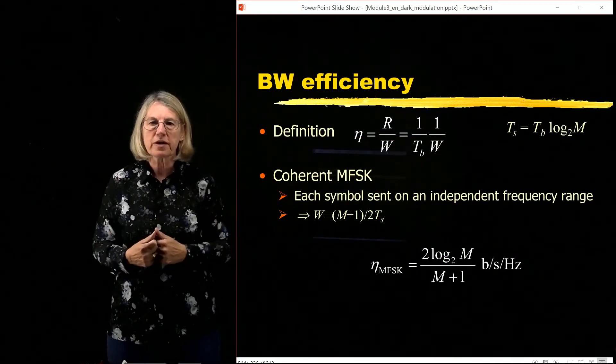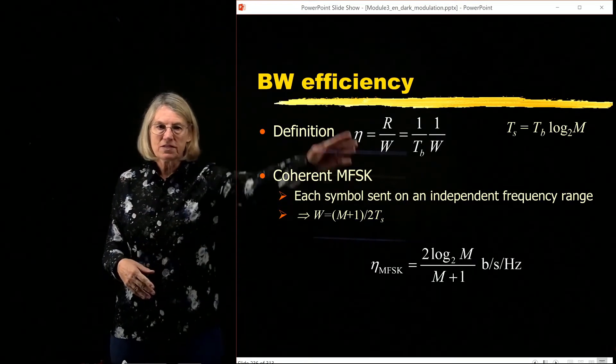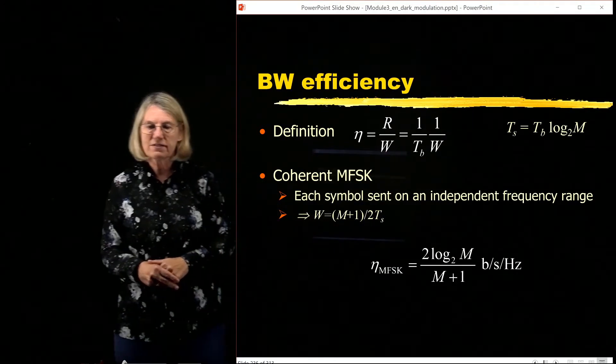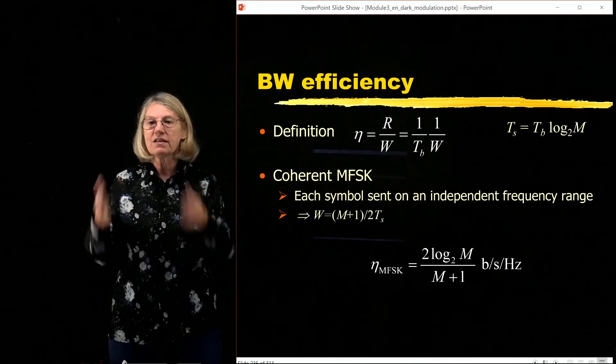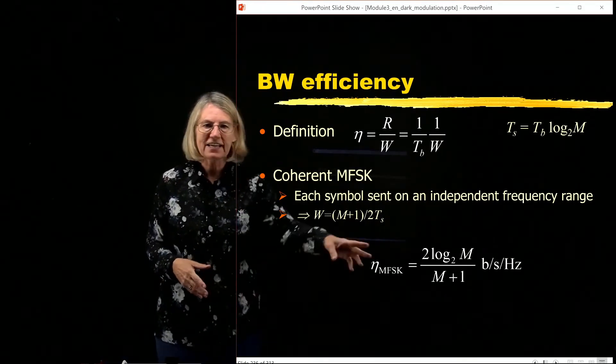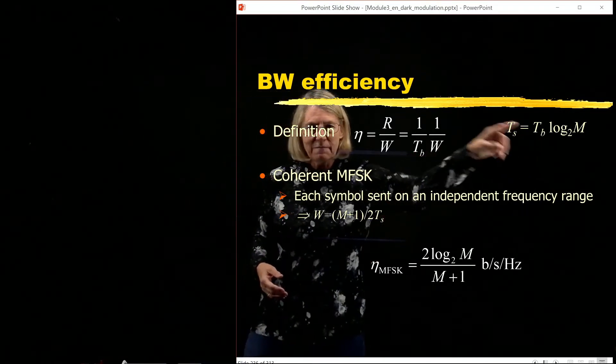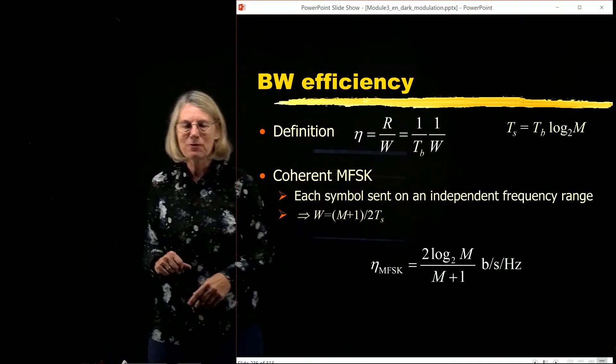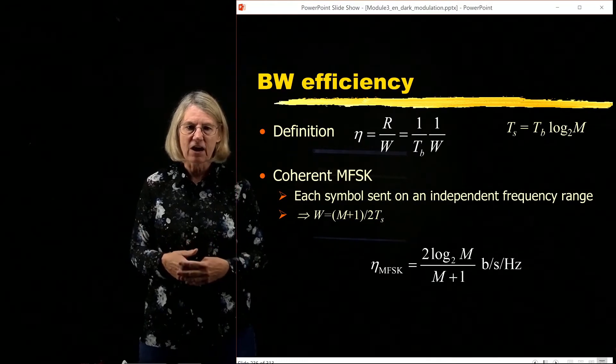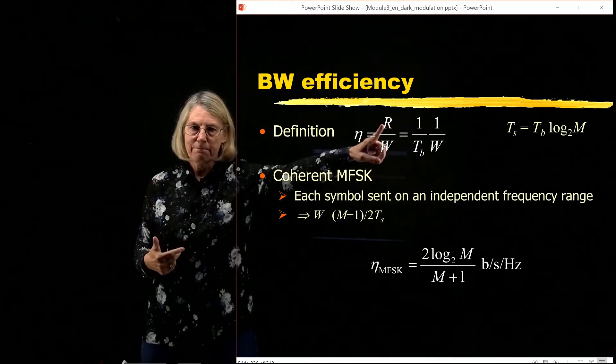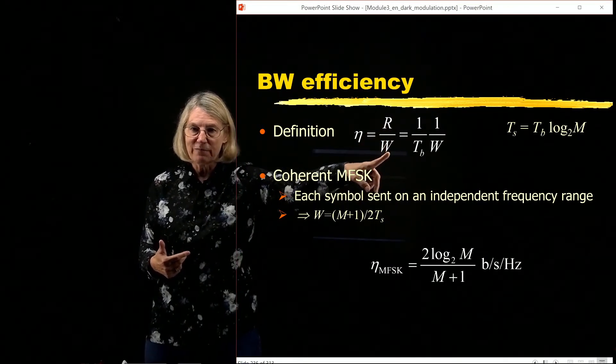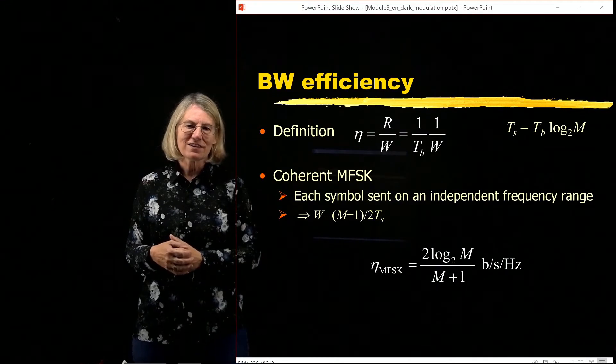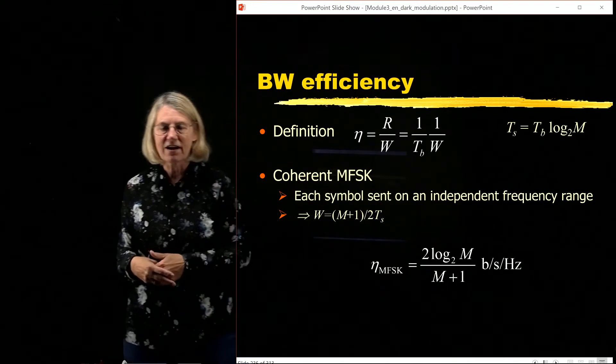So now we can write our general expression for the bandwidth efficiency of coherent MFSK. So this was our general definition, and now I want to put in that the bandwidth w, the occupied bandwidth we've just seen, was m plus 1 divided by 2ts, because it's the time of a symbol that determines the width in the bandwidth. So we put that in, and we can replace the tb by ts divided by log 2m, and we cancel out the ts's, and what we come up with is the spectral efficiency is 2 log 2m divided by m plus 1. And the units for spectral efficiency are always bits per second per hertz. Bits per second from the R, and divided by bandwidth, which is hertz. So bits per second per hertz. Sometimes you think of it as being dimensionless, because 1 over second is hertz, but the correct units are bits per second per hertz.